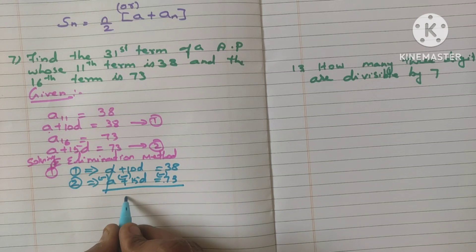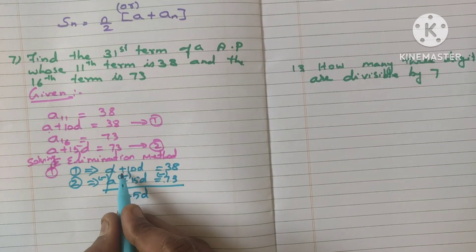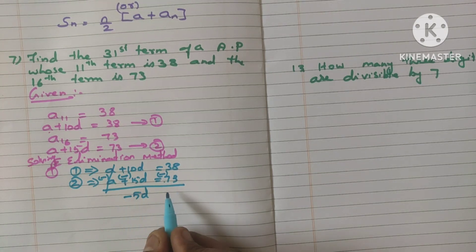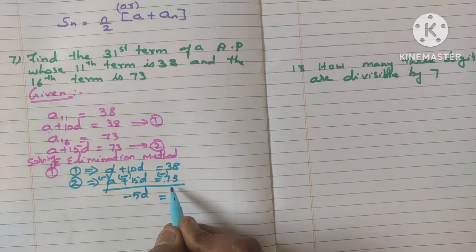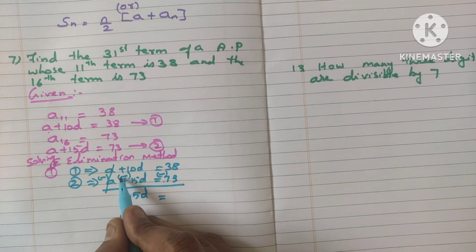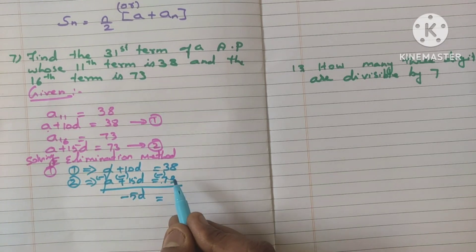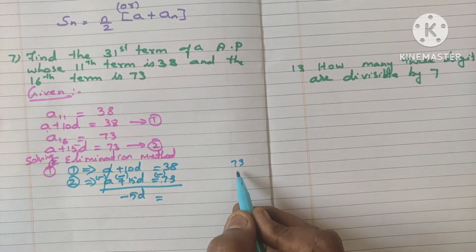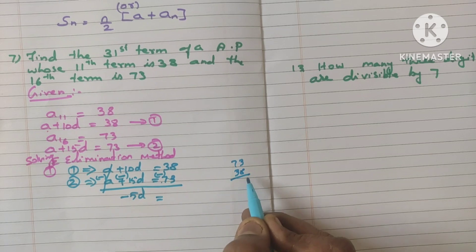Now A minus A will get cancelled. 10d minus 15d is nothing but minus 5d. As I said before, subtract the number. This is positive number. This is negative number. So subtract the number and put the greater number sign. Greater number sign is minus. So this will be minus 5d, which is equal to... If you subtract here also, this is positive number. This is negative number. You should consider only the new sign which we have changed. So 38 minus 73. Subtract the number and put the greater number sign. 73 minus 38, if you subtract...